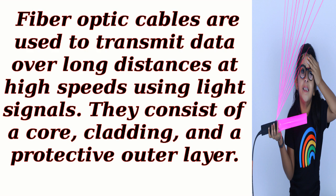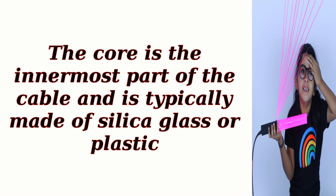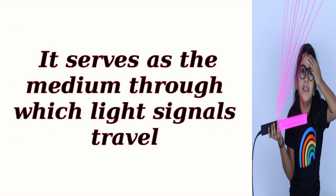They consist of a core, cladding, and a protective outer layer. The core is the innermost part of the cable and is typically made of silica glass or plastic. It serves as the medium through which light signals travel.